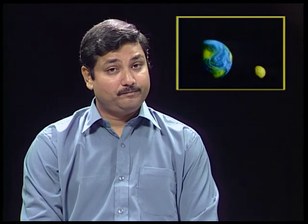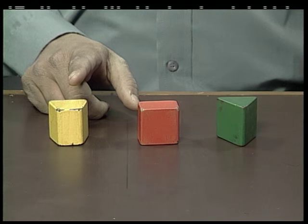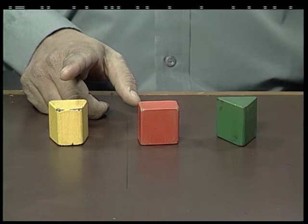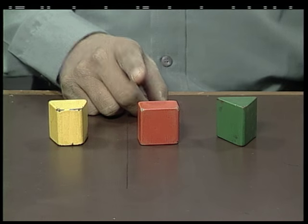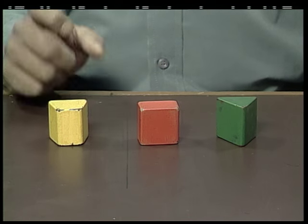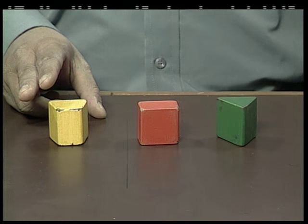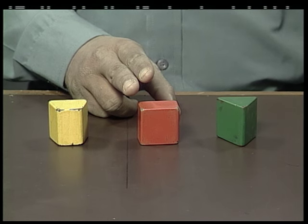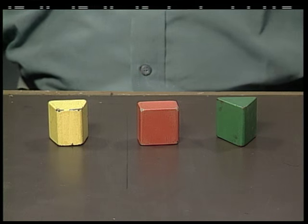Gravitation interaction between two objects also does not depend whether there are other objects present around them. Suppose there are three objects A, B, C present in a region of space. Then the force between A and B is the same whether C is present or not. Similarly, the gravitational interaction between A and C ignores the presence of B. Therefore, to get the net force on A due to B and C, we adopt the following procedure.